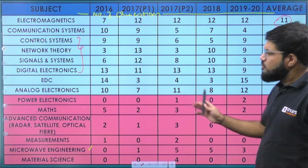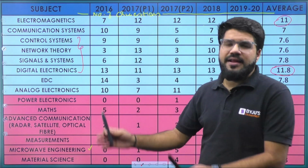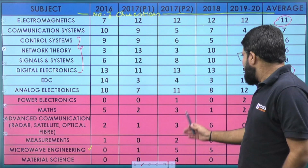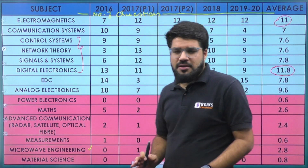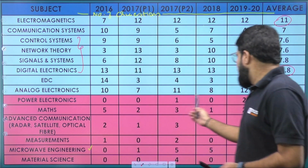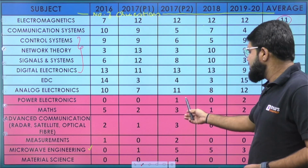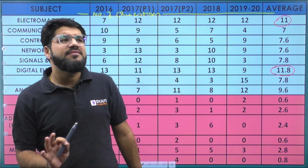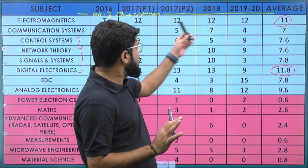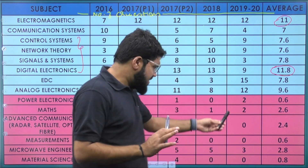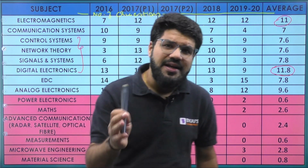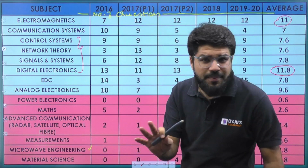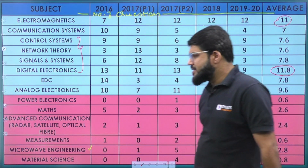Now for the allied or extra technical areas: power electronics — the numbers are sometimes zero, sometimes one or two questions. In 2017 Paper 2 they asked one, and in the last paper they asked two. The message is clear: first focus completely on the core part. For power electronics, only do it if you have time; otherwise, one or two questions from this typically tough-for-EC subject are not worth dedicating heavy study time.